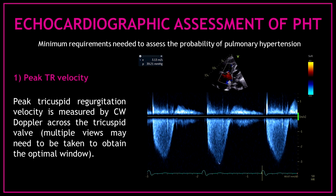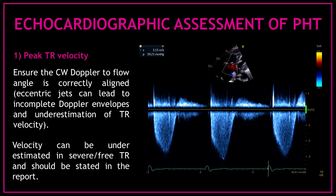When measuring the peak tricuspid regurgitation velocity, ensure the continuous wave Doppler to flow angle is correctly aligned. Eccentric jets can lead to incomplete Doppler envelopes and underestimation of tricuspid regurgitation velocity. Velocity can also be underestimated in severe or free tricuspid regurgitation and this should be stated in the report.